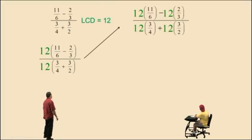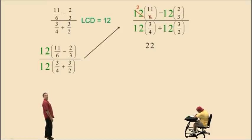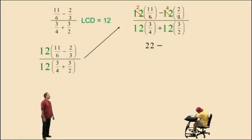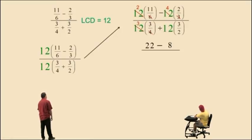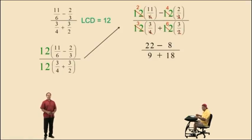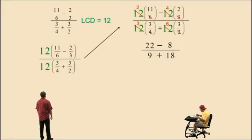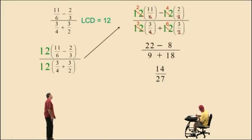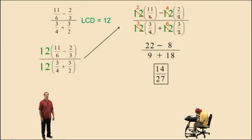Now we can kung fu. Twelve divided by six is two, two times eleven is twenty-two. Subtract. Twelve divided by three is four, four times two is eight. Now the bottom: twelve divided by four is three, three times three is nine. Bring us home — twelve divided by two is six, six times three is eighteen. All of our fractions got kung fu'd. Now we just do basic arithmetic: twenty-two subtract eight is fourteen, nine plus eighteen is twenty-seven. That is our final answer — fourteen over twenty-seven, kung fu.